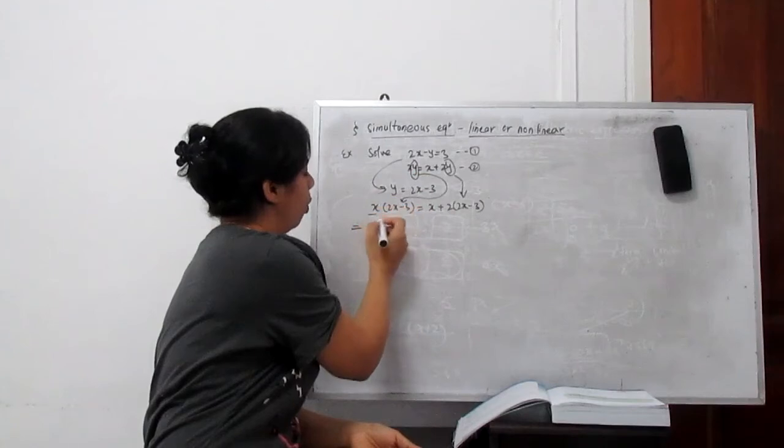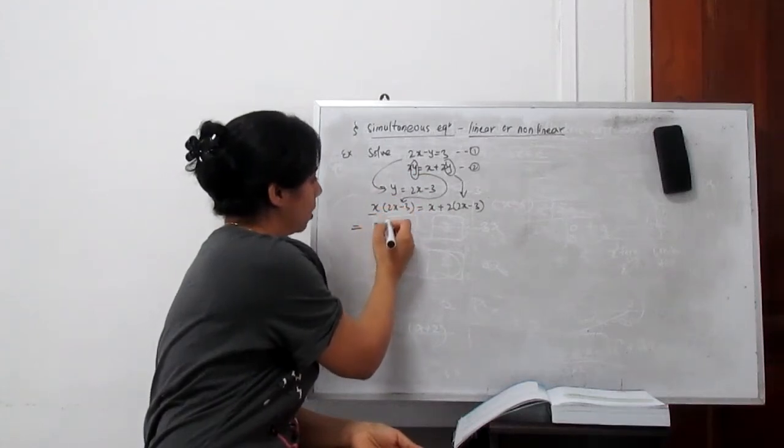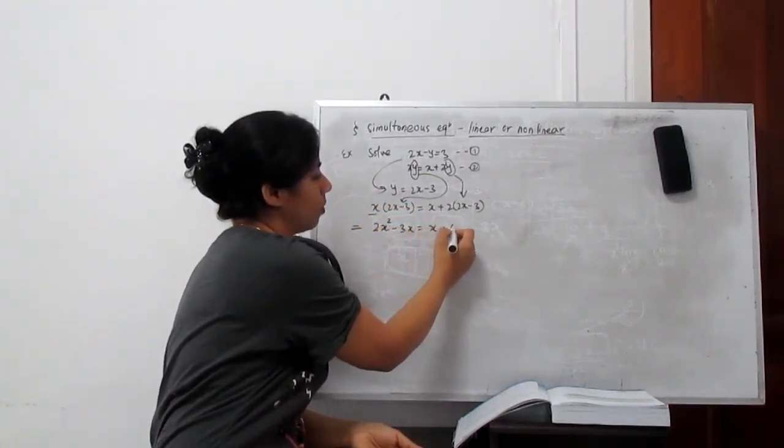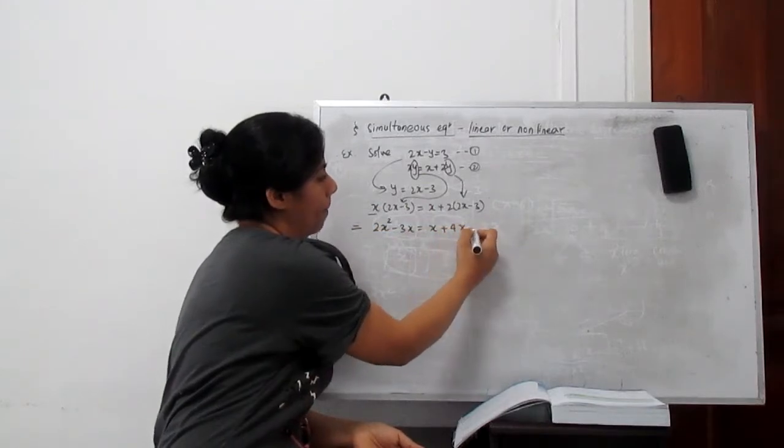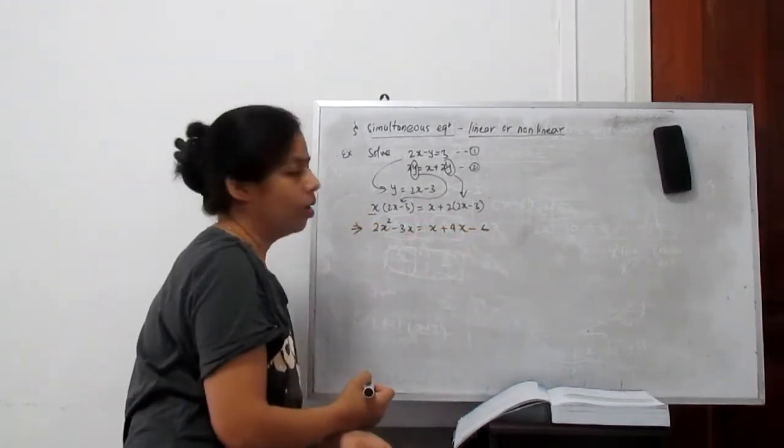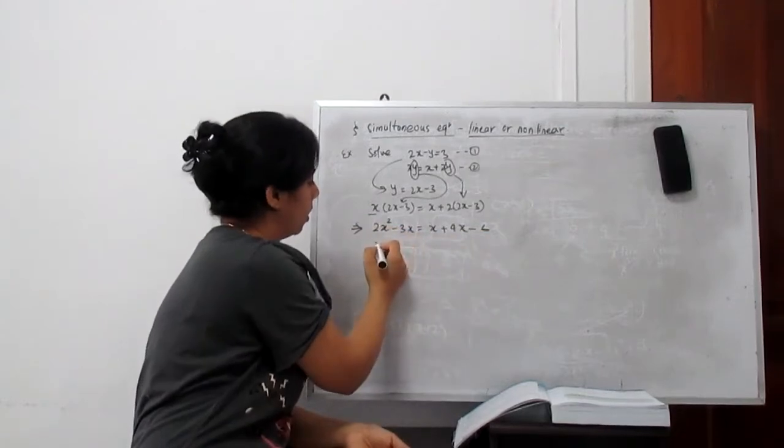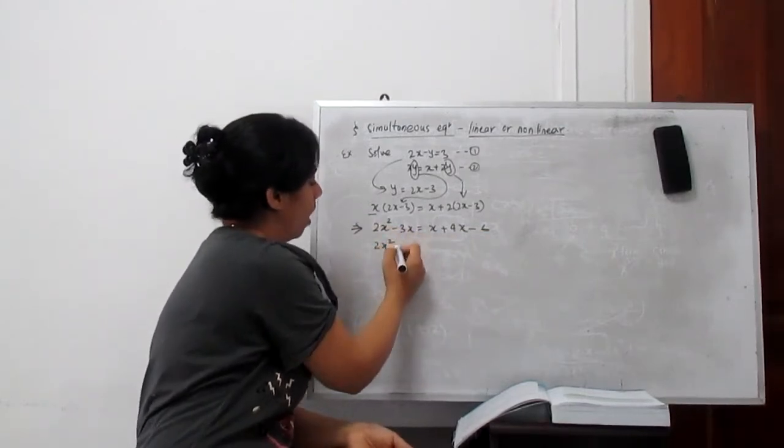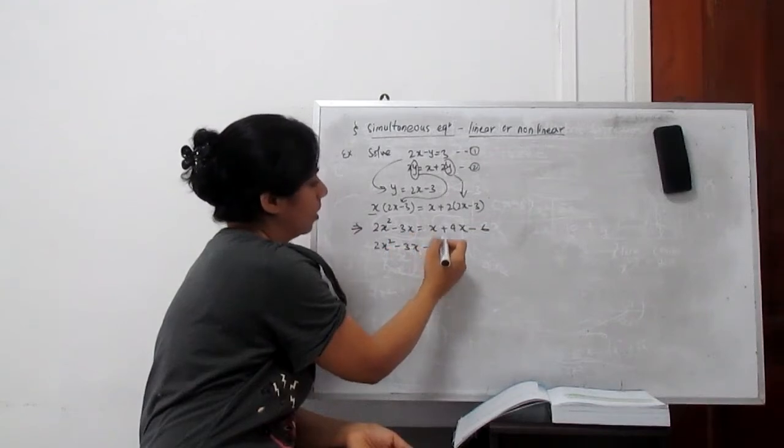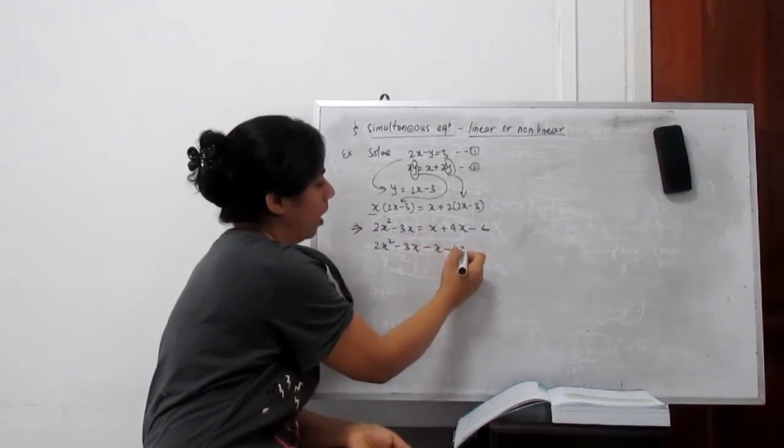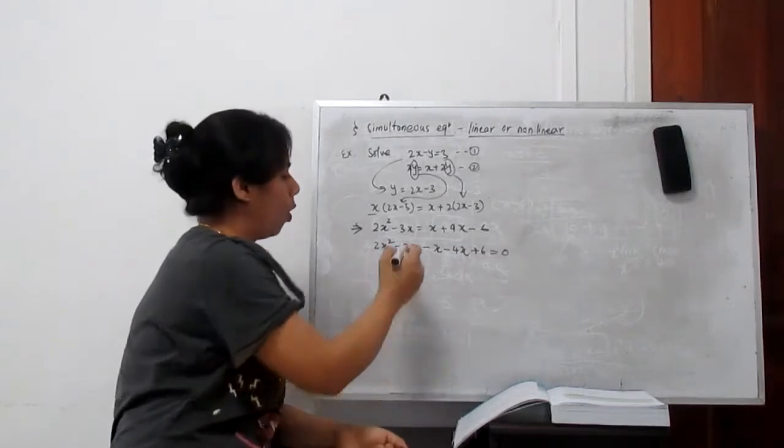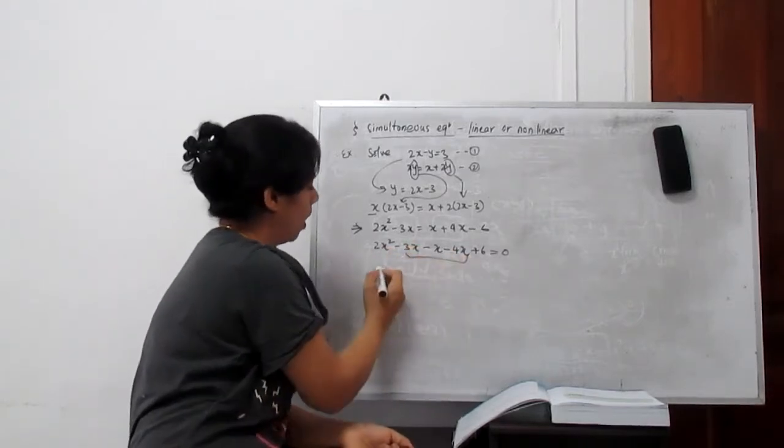Now you can simplify. When you open all the brackets, it's 2x squared minus 3x equals x plus 4x minus 6. Now this is a quadratic equation. 2x squared minus 3x minus x minus 4x plus 6 equals 0.